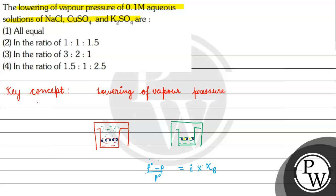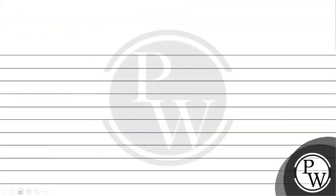Here, the concentrations are given as equal at 0.1 molar aqueous solution. But where is the difference? The solute - we have NaCl, CuSO4, and K2SO4.